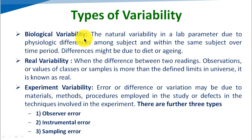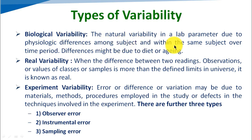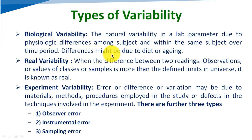First type is biological variability — the natural variability in a lab parameter that is due to physiological difference. Among subjects, that means person to person, and within the same subject over a time period, that is known as biological variability. This difference may be due to diet condition or aging. Between persons, and also within one person, we can consider this variability.